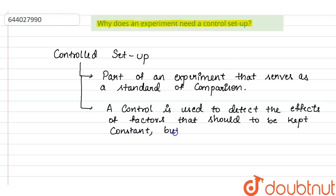But which vary in the experimental setup. In control it will be constant, in experimental setup it will vary. So this is why we need the control setup - because it's a standard of comparison with respect to the experiment. Thank you.